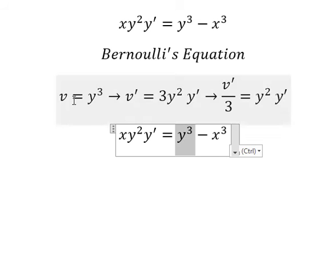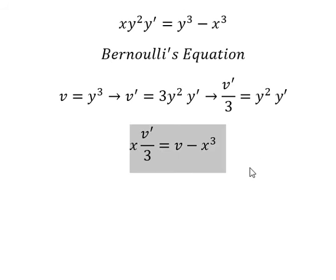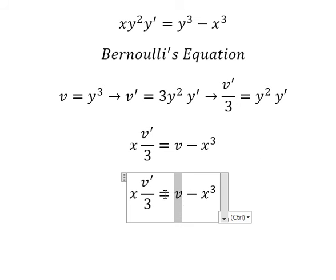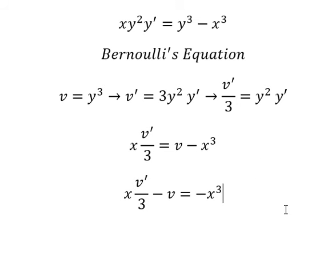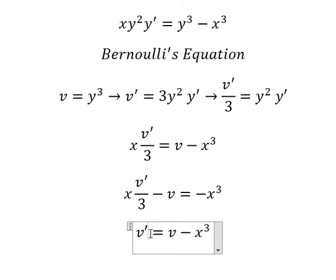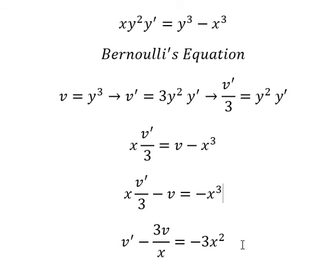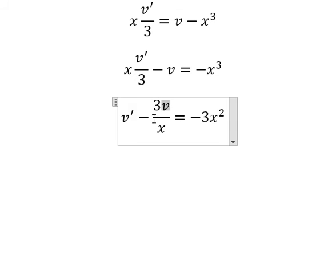This one we substitute with v, and this one we substitute accordingly. So v goes on the left side. Next we divide both sides by s over number 3. Next we have v and the first derivative of v, so we can use the integrating factor method.